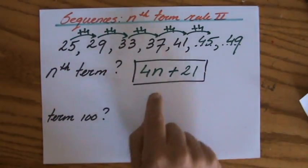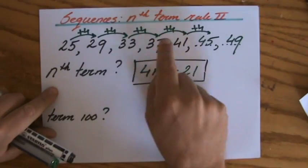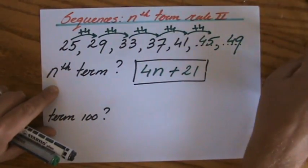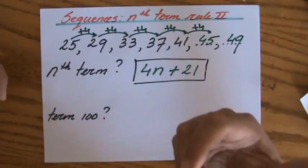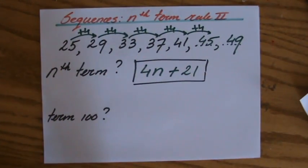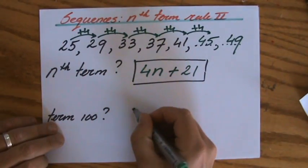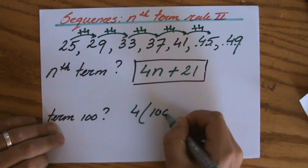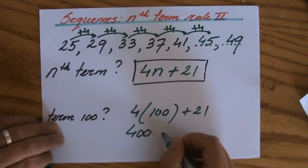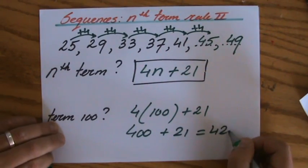Now I can use that formula to find term 100, rather than doing plus 4 a hundred times. For term 100: 4 times 100 plus 21, that is 400 plus 21, it is going to be 421.